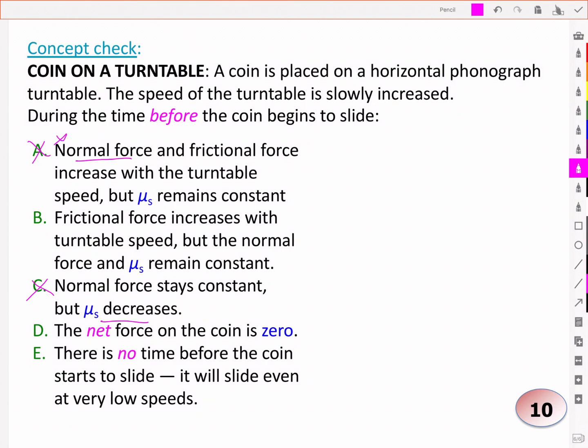The net force on the coin is zero. Well, it's not moving, is it? It's not sliding. So you might be tempted to think that the net force is zero. But remember, there's an acceleration here. There's a centripetal acceleration or a radial acceleration that is keeping that object on the turntable. And in this case, it's the frictional force that is causing that. That is keeping it in place and keeping it moving in the circle. So there is a net force here. There's no time before the coin starts to slide. It will slide even at very low speeds.